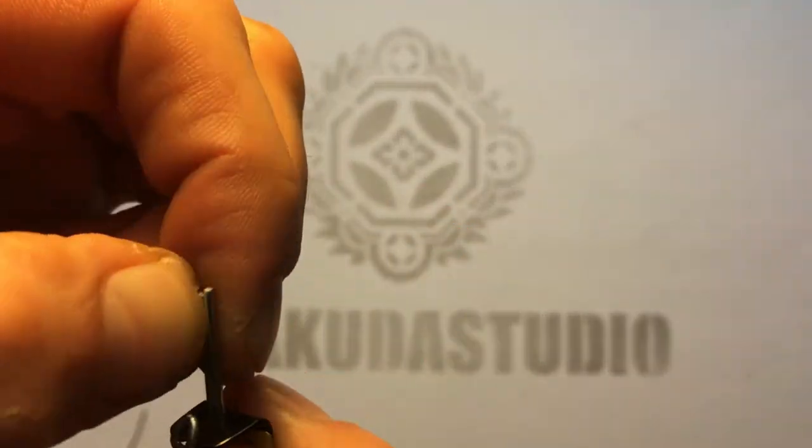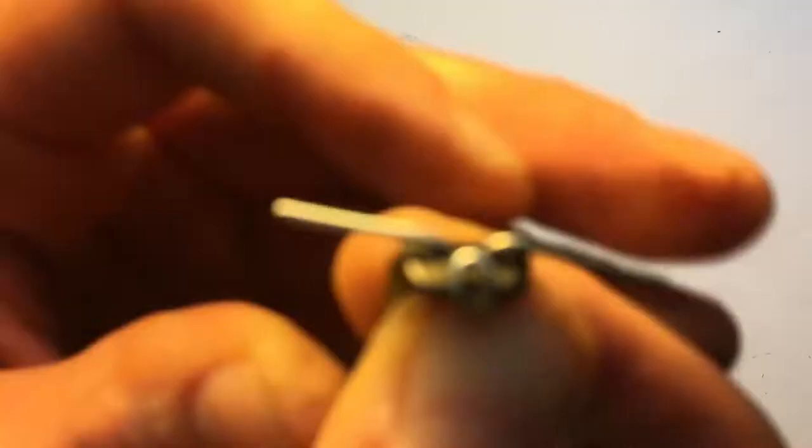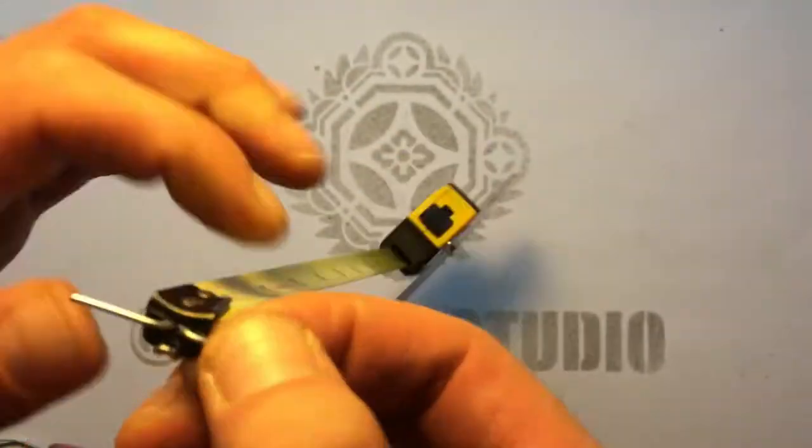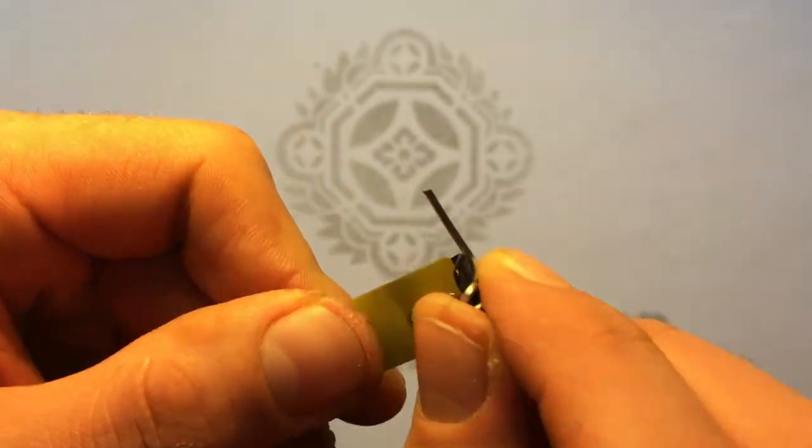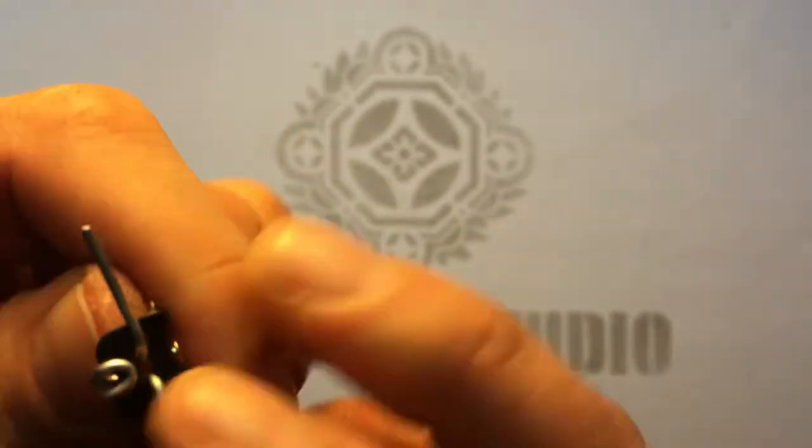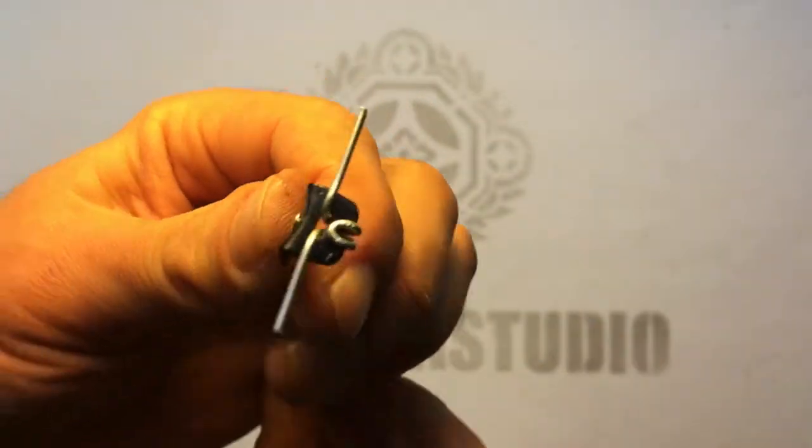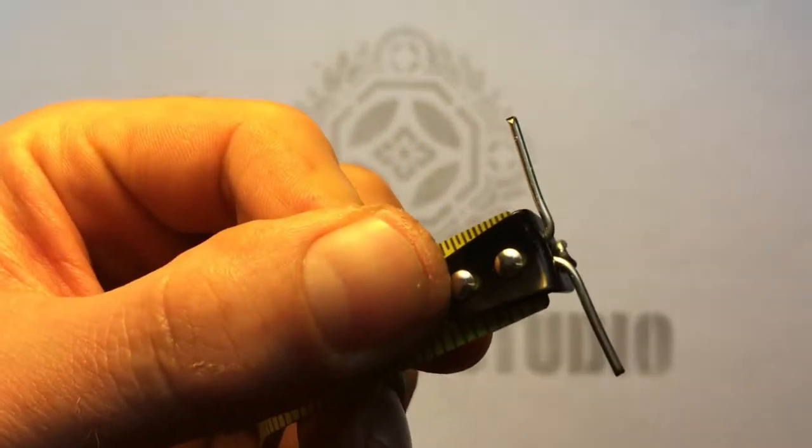Use the needle nose pliers to clamp down any part of the wire that wiggles so you should end up with this nice tight bit here that has two parts of the wire exposed to either side which we'll then use to attach the velcro.